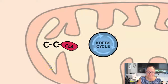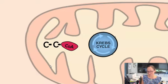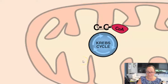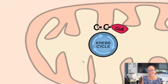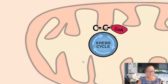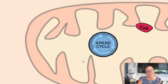We just left off in the matrix of the mitochondria forming acetyl-CoA. The Krebs cycle happens also in the matrix of the mitochondria, and we're going to start with taking that acetyl-CoA. The coenzyme A is not really used in the Krebs cycle — its role is kind of to act as a helper to help the acetyl join into the Krebs cycle.